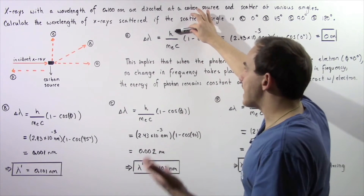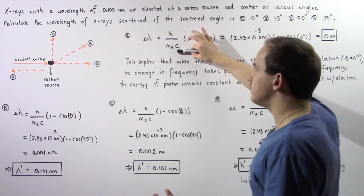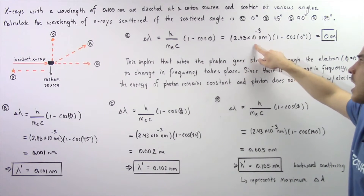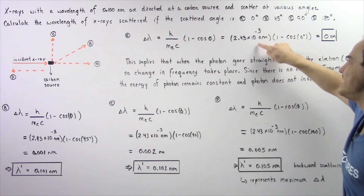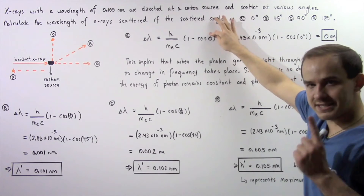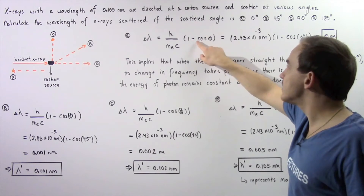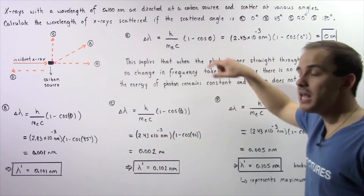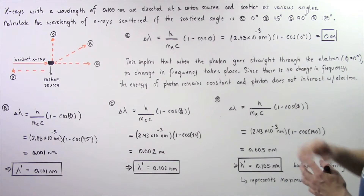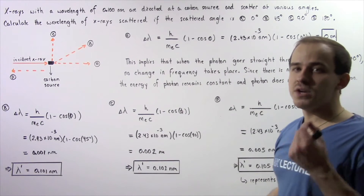Here h is Planck's constant, m is the mass of the electron, and c is the speed of light. Plugging in those values gives us 2.43 × 10⁻³ nanometers. For Part A, we plug in an angle of 0°: 1 minus cosine of 0 equals 1 minus 1, which gives us 0. So the change in wavelength is 0 nanometers.